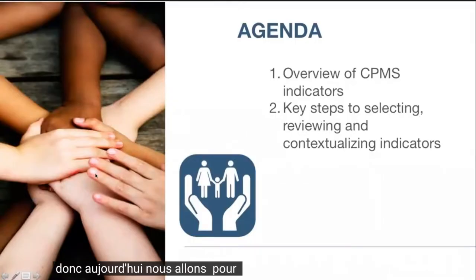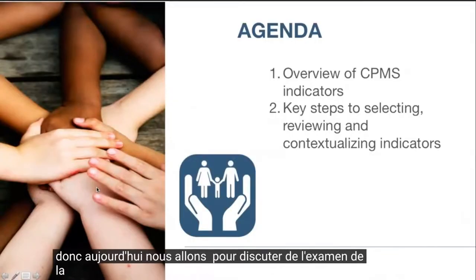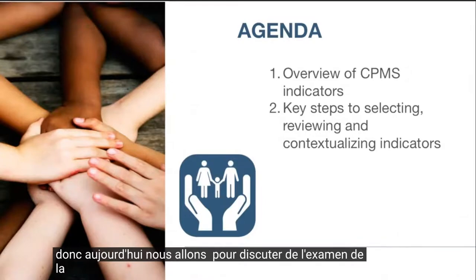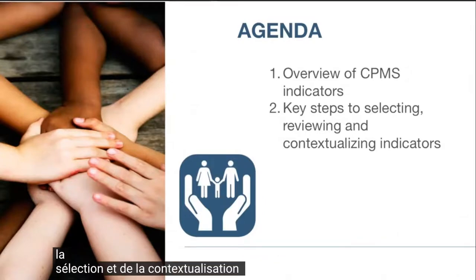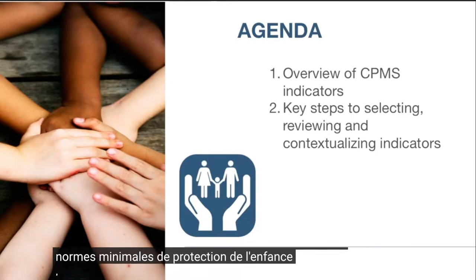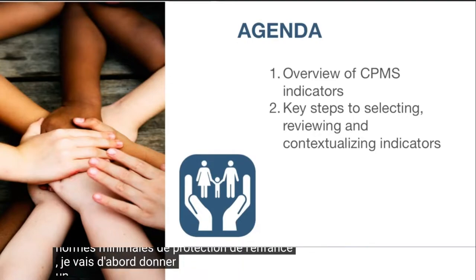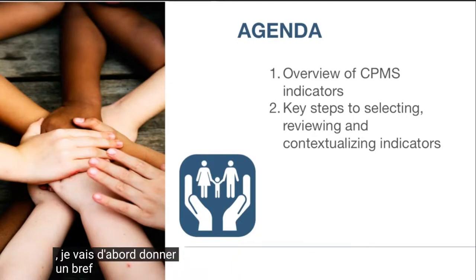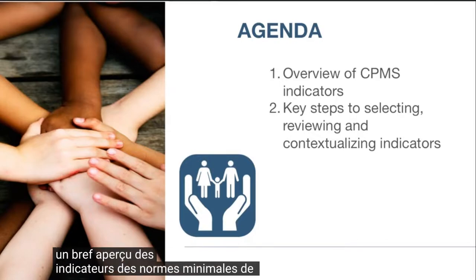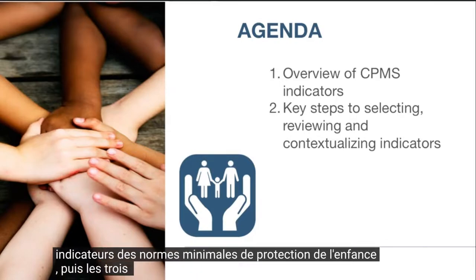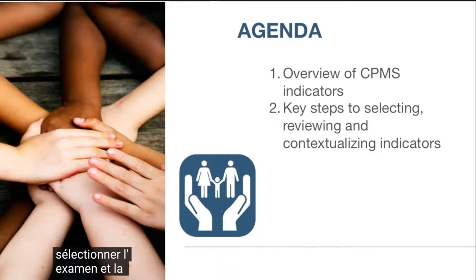Today we're going to be discussing the selection, review, and contextualization of Child Protection Minimum Standards Indicators. I will firstly provide a brief overview of the Child Protection Minimum Standards Indicators and then the three key steps to selecting, reviewing, and contextualizing indicators.